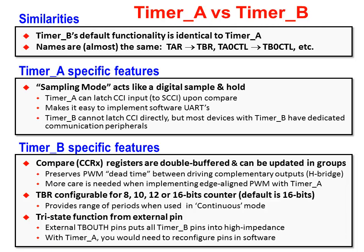If you were to import the code from Timer A to Timer B, the biggest thing you'd have to do is replace all the references to A with B. Each timer has its own small advantage: Timer A can latch the capture and compare input bit, giving it a sample-and-hold feature — a slight advantage when using the timer for communications, such as bit-banging a UART in software, though most MSP430 devices now have dedicated UART peripherals. On the other hand, Timer B has a couple of features that give it a slight edge when creating PWM waveforms — for example, by double-buffering the CCR registers, they can be updated without altering the current values, which is handy when driving H-bridges.